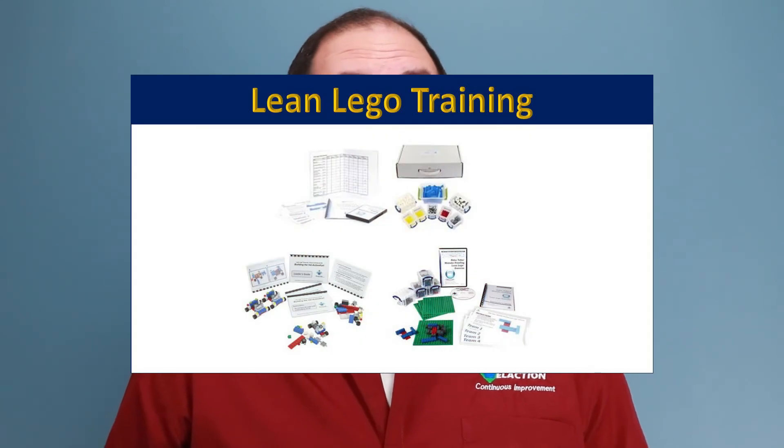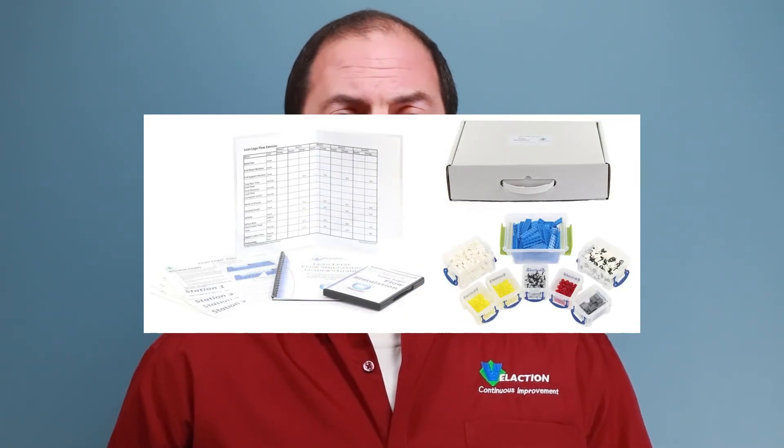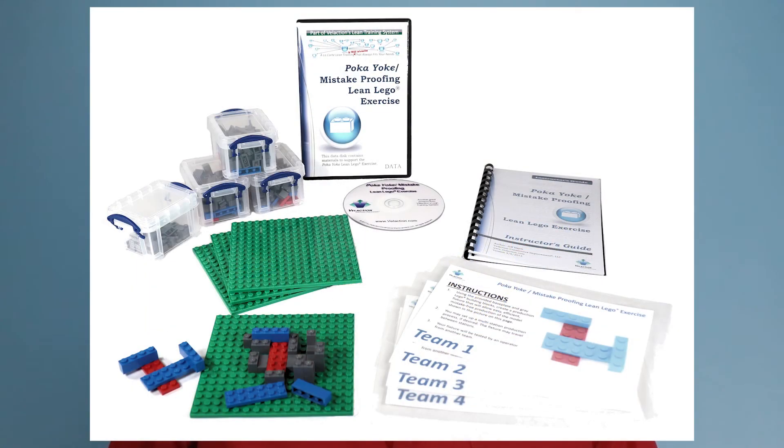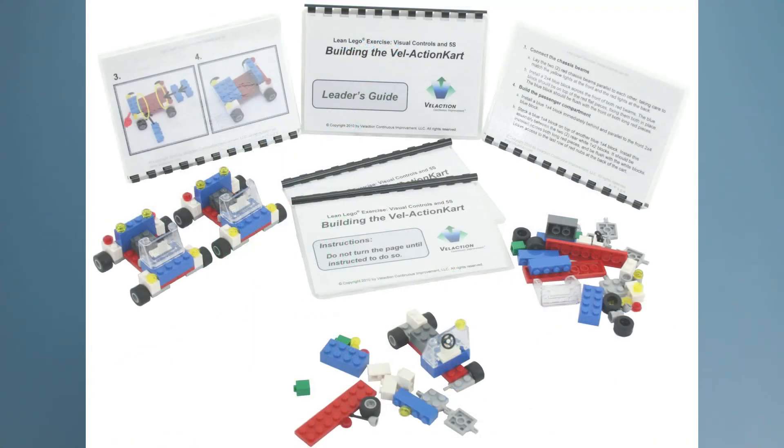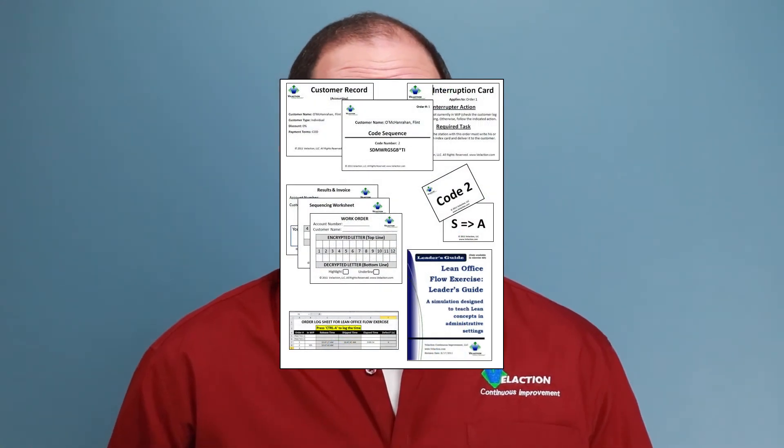As part of the lean training system this video comes from, we offer a variety of lean lego training packages. These include our lean lego flow simulation, mistake proofing or poke yolk lean lego exercise, and our visual controls and 5S lean lego exercise. We've also got an office flow simulation for those not implementing continuous improvement on the shop floor. Click the links in the description below, or click on cards that pop up on this video to learn more. We'll also add links at the end.